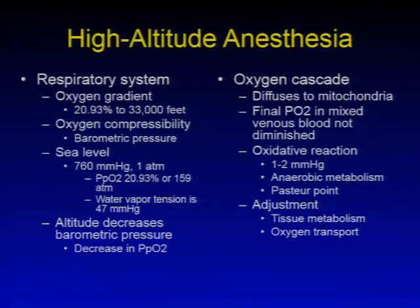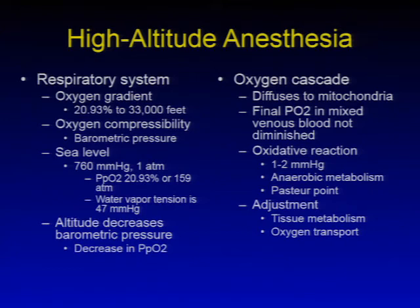High-altitude anesthesia is one of the other special techniques involved in anesthesia care. In high-altitude anesthesia, the respiratory system may be most affected. The oxygen gradient still maintains 20.93% or 21% up to 33,000 feet. However, oxygen compressibility is involved with changes in the barometric pressure.